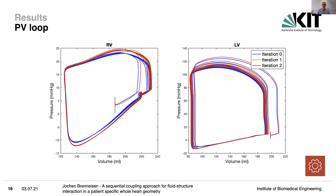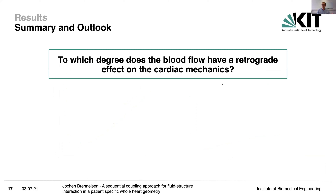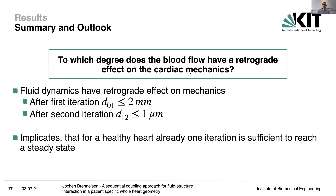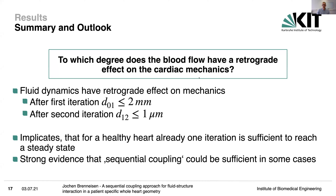Comparing PV loops, there is actually a difference — a higher pressure and a higher volume of 2 to 3 mmHg and 2 to 3 milliliters. But you can already see that you can't distinguish the first iteration because it is superposed by the second. This shows that already after one iteration we have reached a steady state. That lets me come back to the initial question: to which degree does blood flow have a retrograde effect on cardiac mechanics? We clearly saw a retrograde effect. Investigating the Euclidean distance, after the first iteration we are below 2 millimeters, and after the second iteration already in the sub-micrometer range. This implies that for a healthy heart, one iteration is enough to reach steady state in this sequential coupling approach — strong evidence that sequential coupling could be sufficient.